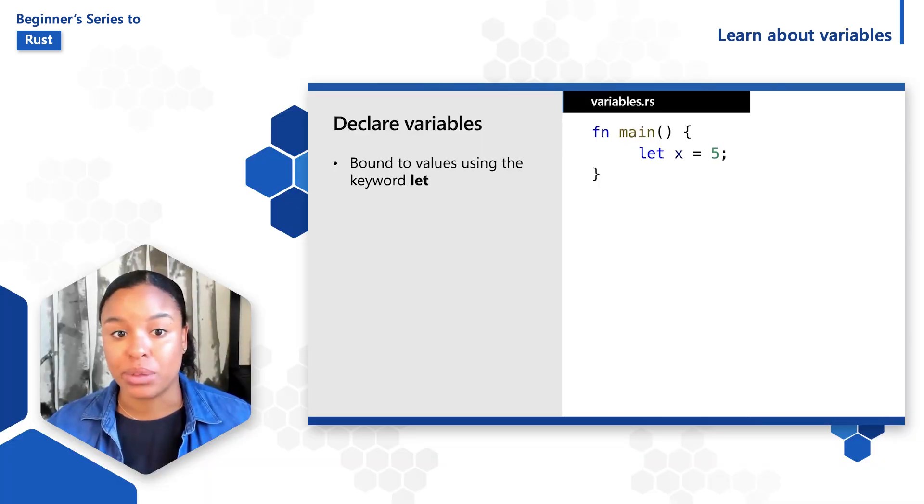Variables are bound to values using the keyword let. So if I declare a new variable, I can type let x is equal to 5. Note that I use the let keyword, give the variable a name, x, and assign it a value, 5.